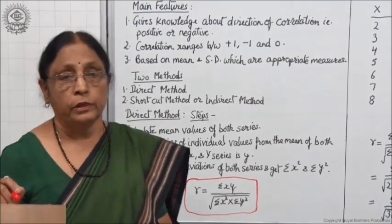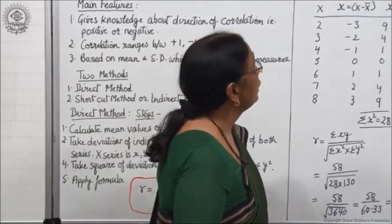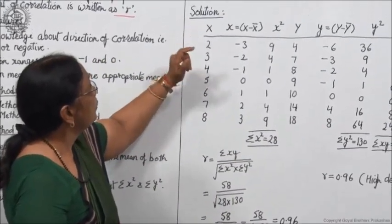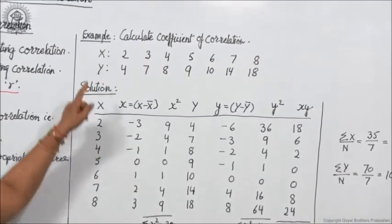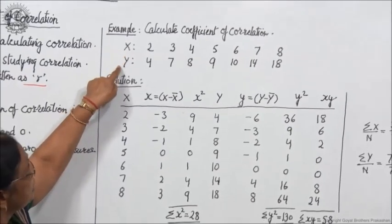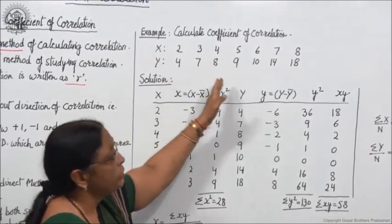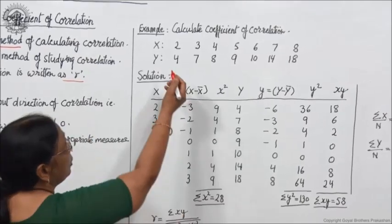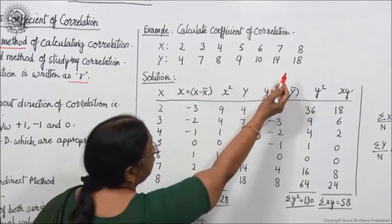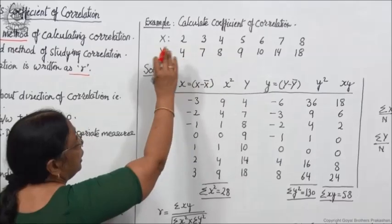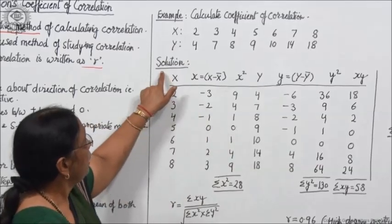Now the calculation is required to see how the coefficient of correlation is calculated. Let us move to the example. It says: calculate the coefficient of correlation from the given data. Two series are given — x and y. X is 2, 3, 4, 5, 6, 7, 8, and y is 4, 7, 8, 9, 10, 14, and 18. You are supposed to find out the coefficient of correlation between these two series. Here I have shown you the solution, and after getting the data you have to make different columns.